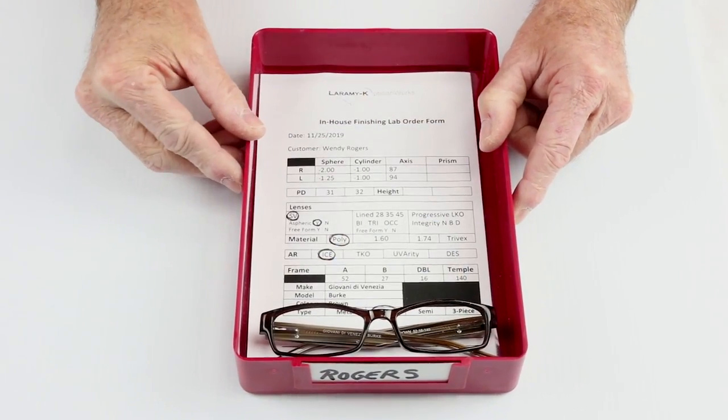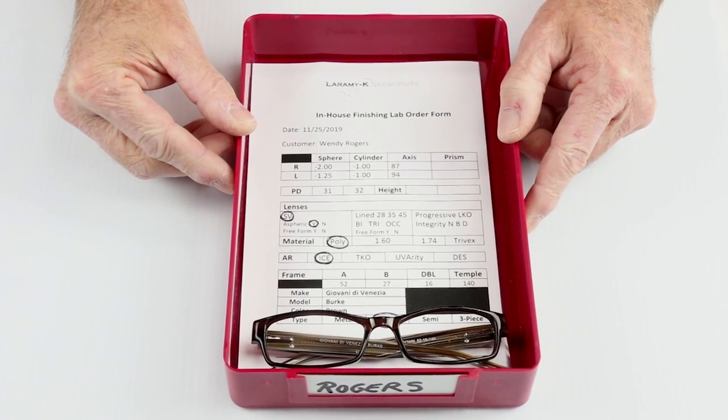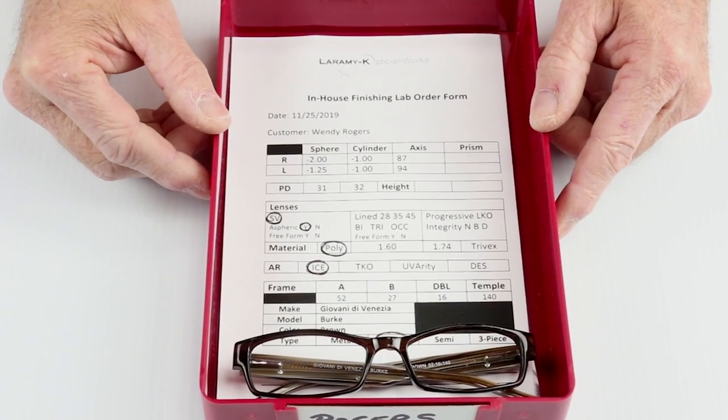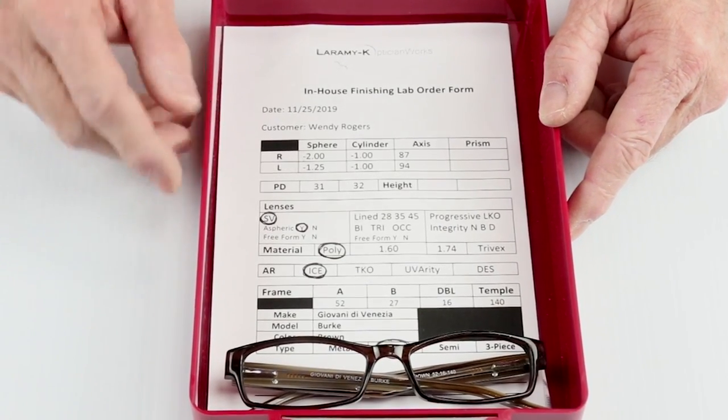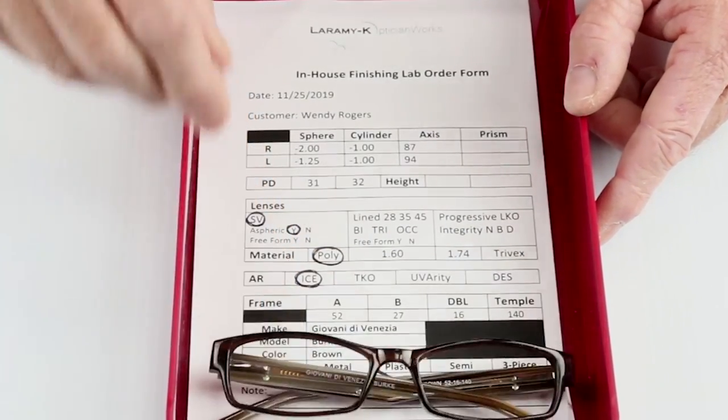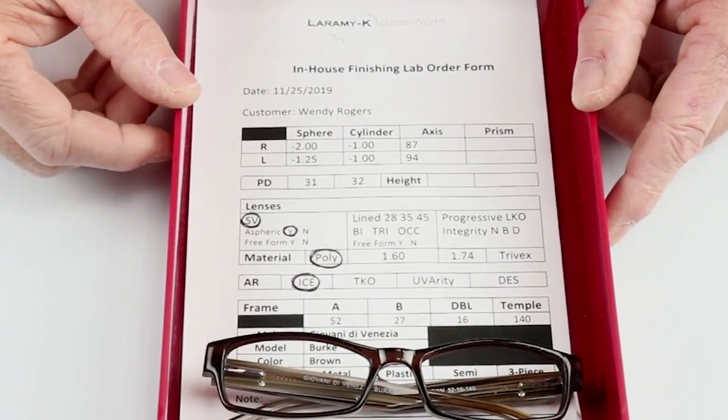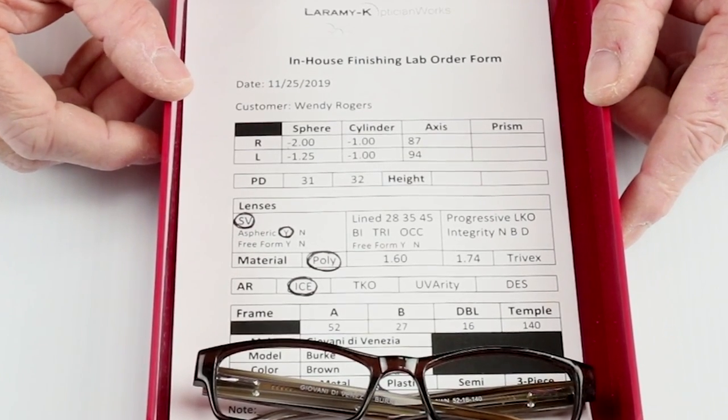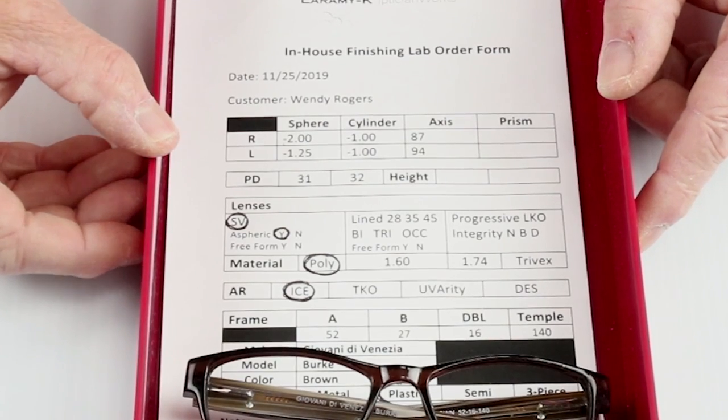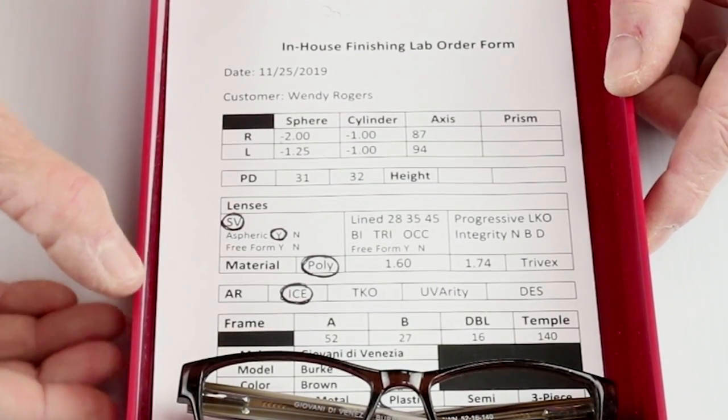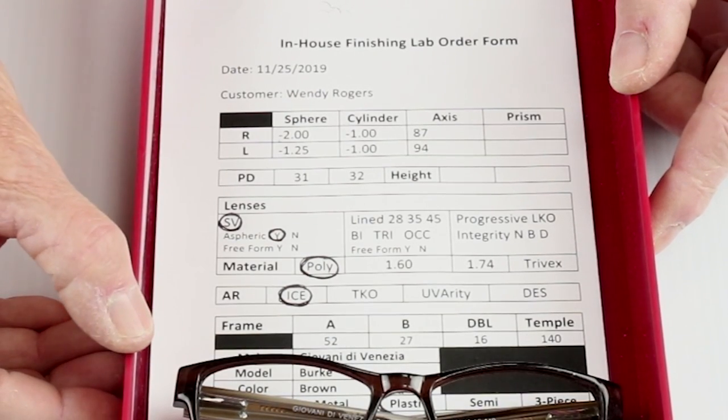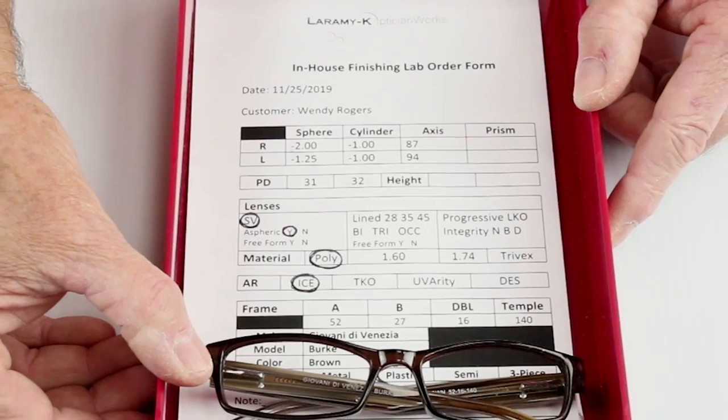This is a very typical order for a basic single vision job that you would run in a matter of a couple of minutes for a patient that might be waiting for their glasses. It's going to have a job order form which the optician just filled out, the frame that the patient chose, and the lab order form is going to give you all the information that you need in order to run the job. Most important: prescription, patient PD, the lens type, the material, any non-glare or AR coatings, and all of your frame information to make sure you got the right frame in the right tray.